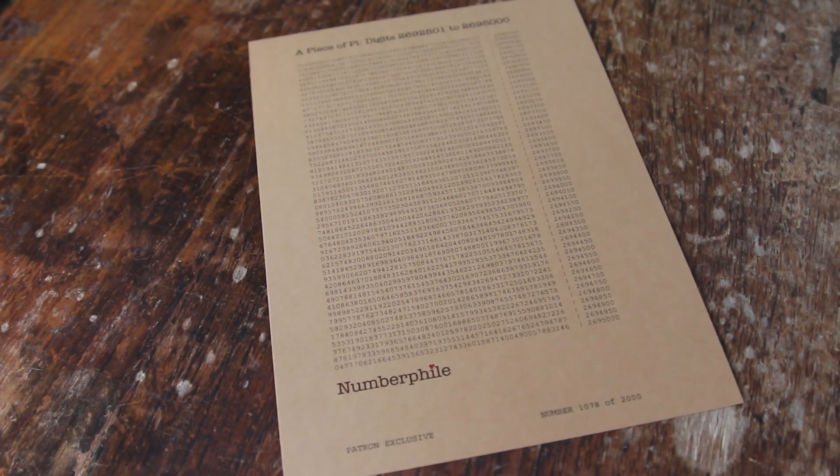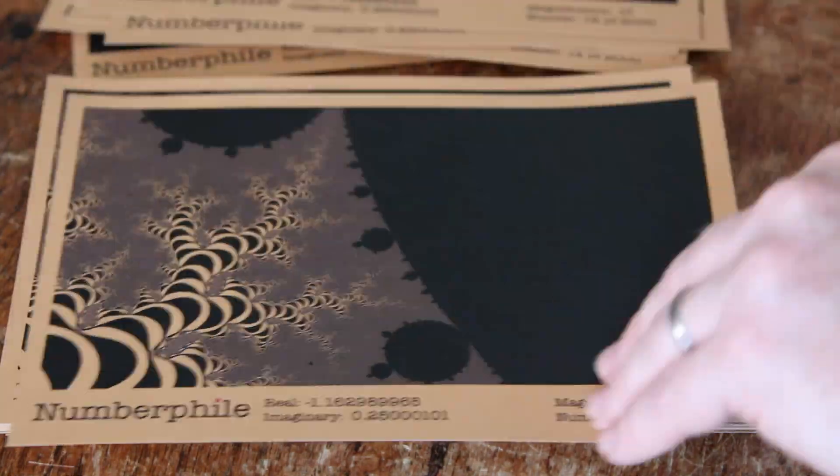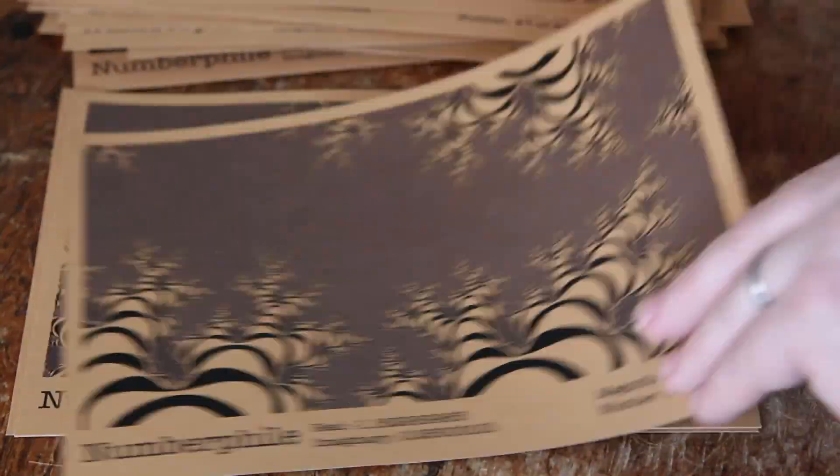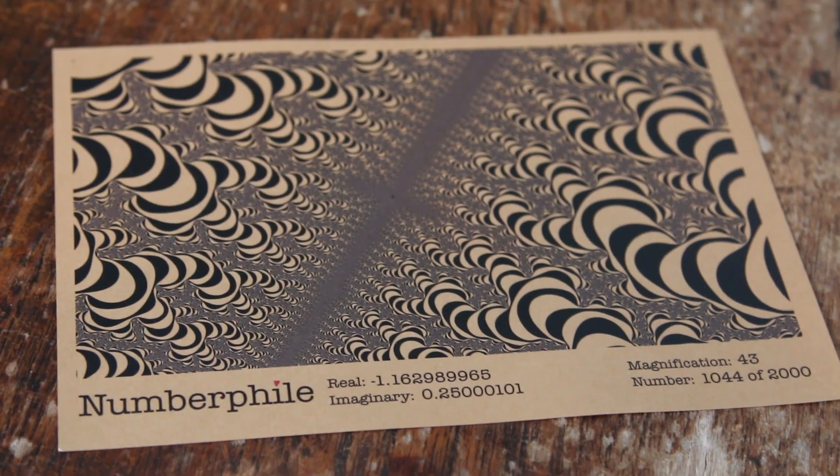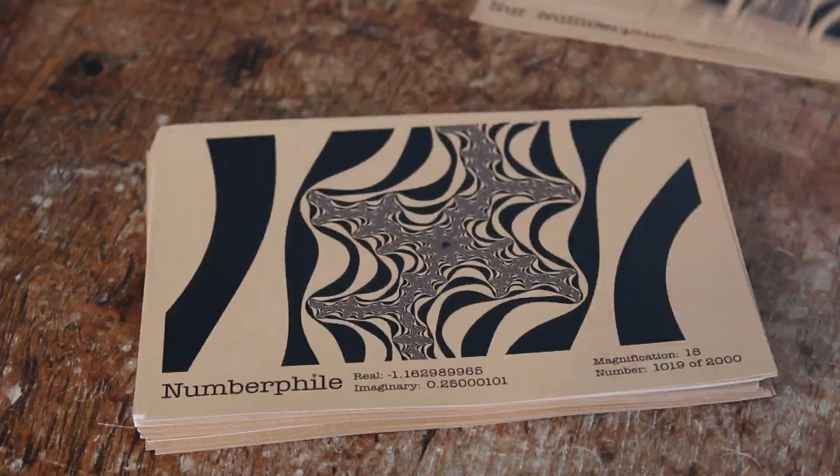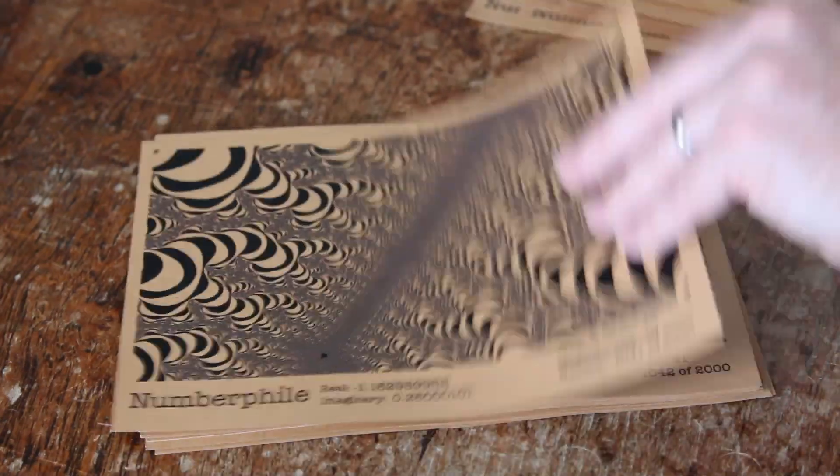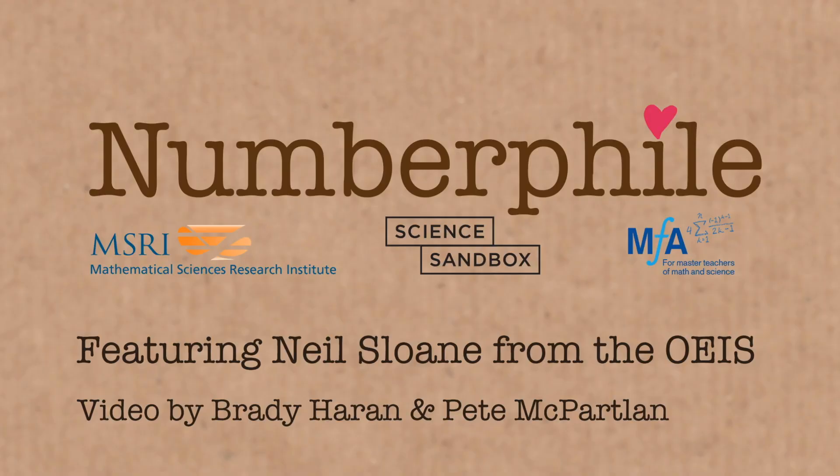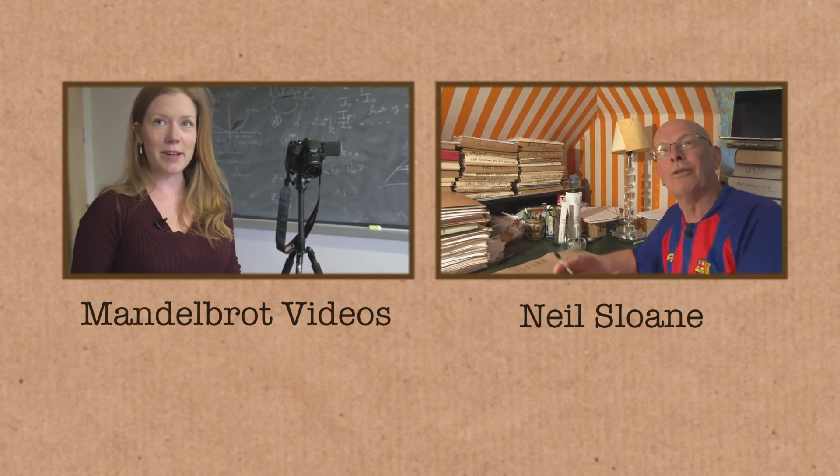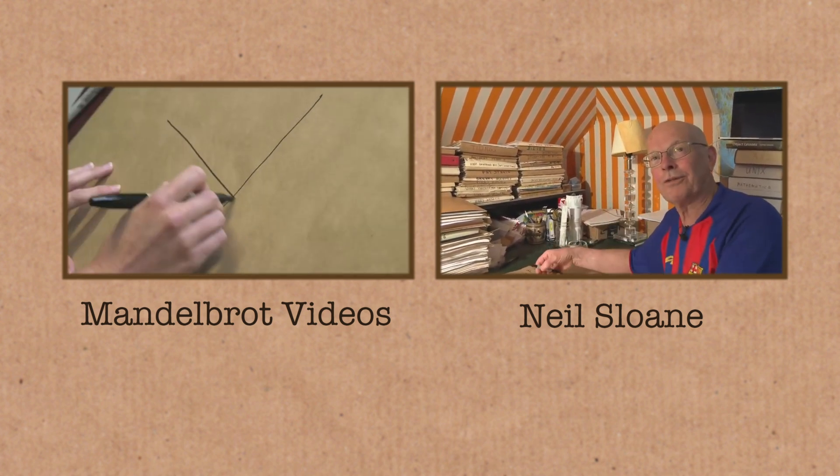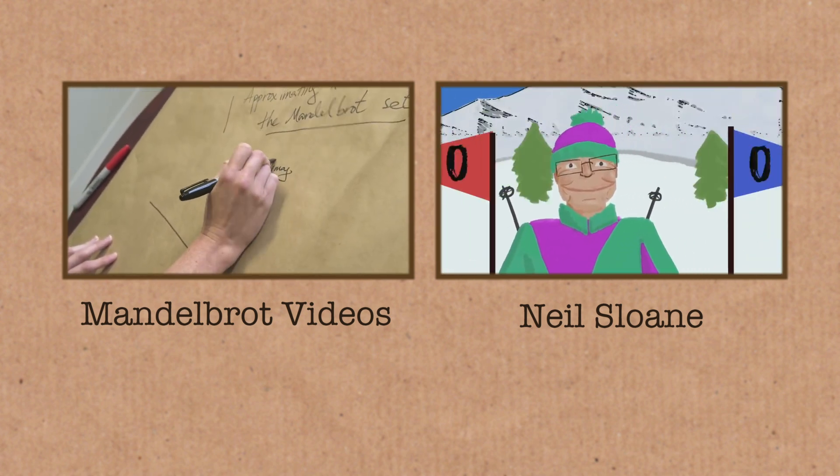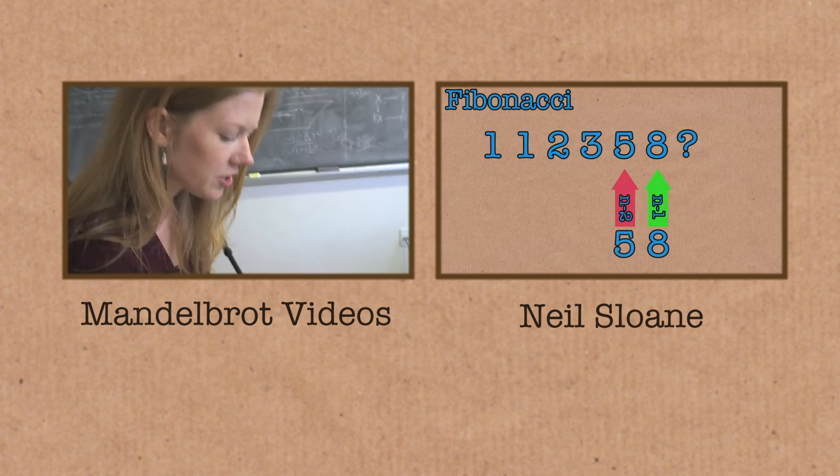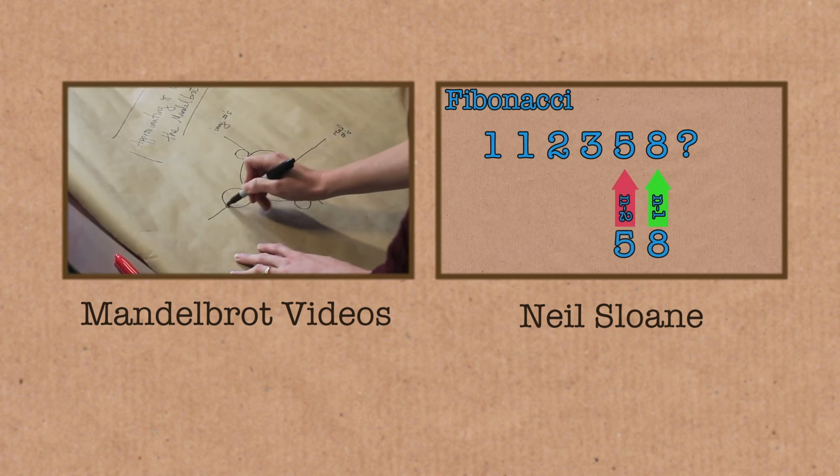You might remember these pieces of pie we shared with Numberphile supporters a while back. Well, they were so popular. We've now created these unique views of our beloved Mandelbrot set. Each piece is individually numbered and is a one off perspective, a different location, a different magnification. If you'd like us to send you one, find out more in the link we've included below. I want to talk about approximating pie in the Mandelbrot set. Maybe it's best to do a little bit of a reminder about what the Mandelbrot set is. So remember the Mandelbrot set was this object that we have in the complex plane. So here are the real numbers and here are imaginary numbers. And the Mandelbrot set was a collection of complex numbers.